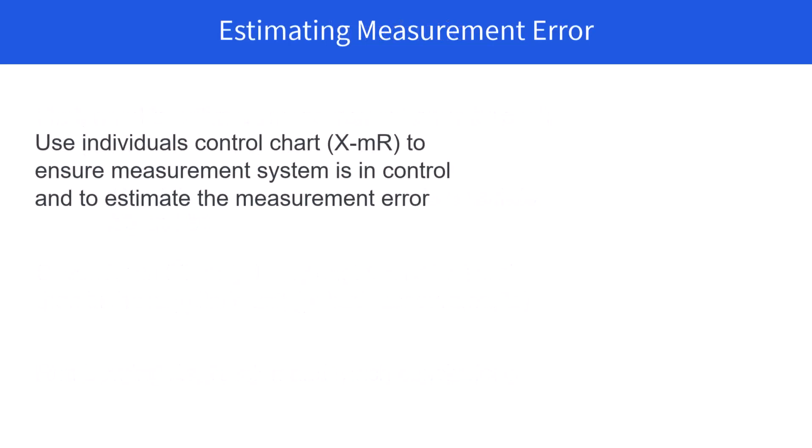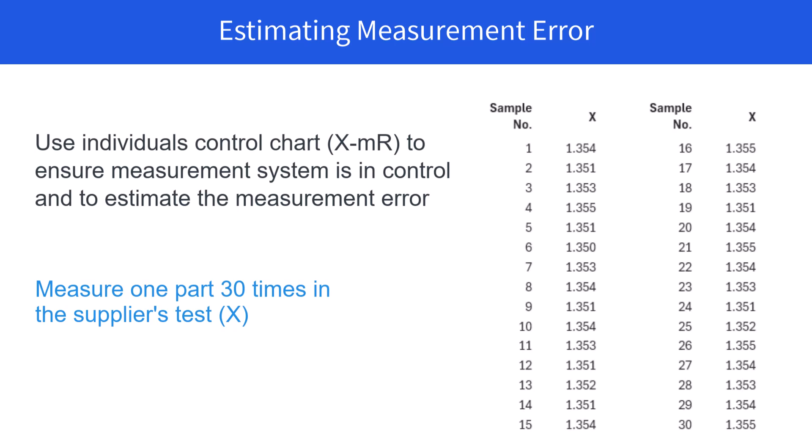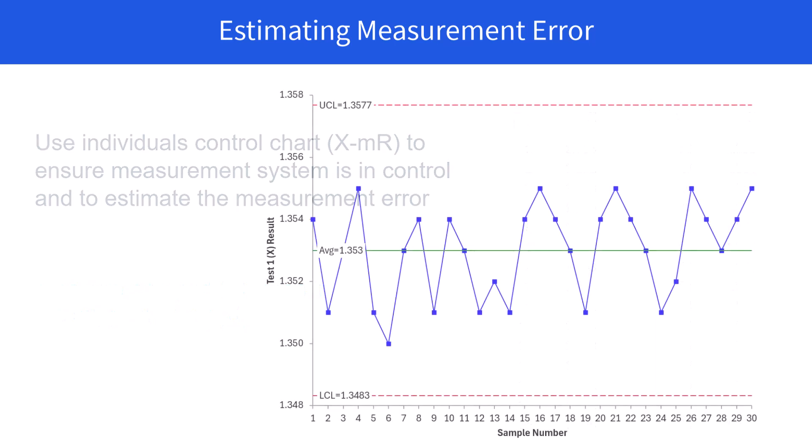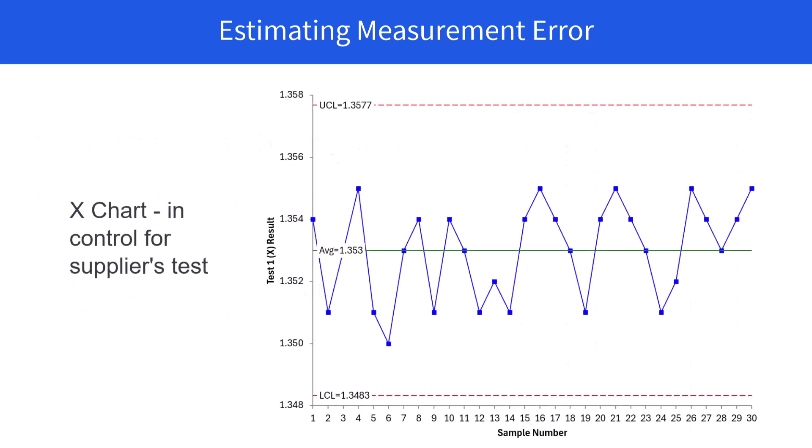So we start by using the individuals charts to ensure our measurement system is in control. And we're going to measure one part 30 times in the supplier's test. And you can see the results here. 1.354 for the first one. Then we plot an X chart. And you can see from here the X chart is in control for the supplier's test. No points beyond the limits, and there are no patterns.